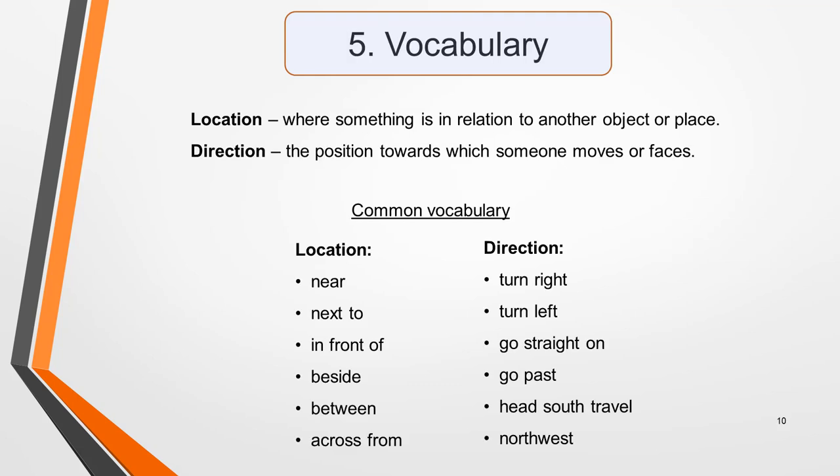To do well in map and plan questions, you need to understand the language of location and direction. A location is where something is in relation to another object or place. A direction is the position towards which someone moves or faces. Here's some common vocabulary of location: near, next to, in front of, beside, between, across from. Common vocabulary of direction includes: turn right, turn left, go straight on, go past, head south, north west. Knowing this vocabulary is so important to your success that I've written a whole lesson on it. You'll find a link to this lesson in the notes below this video.